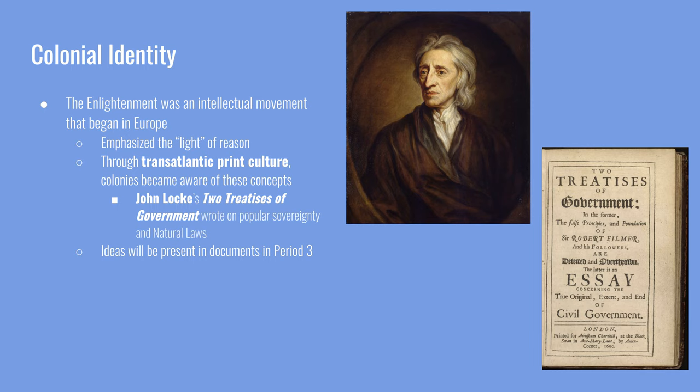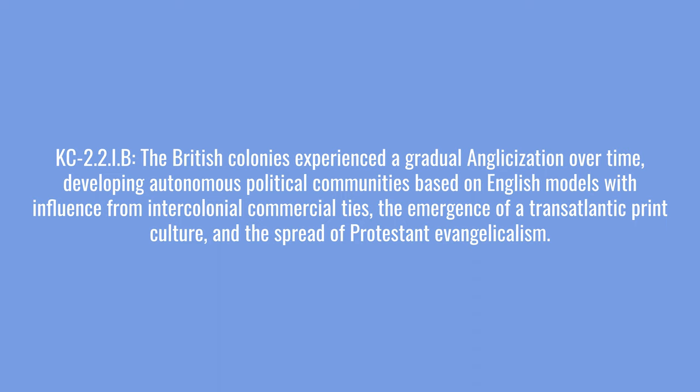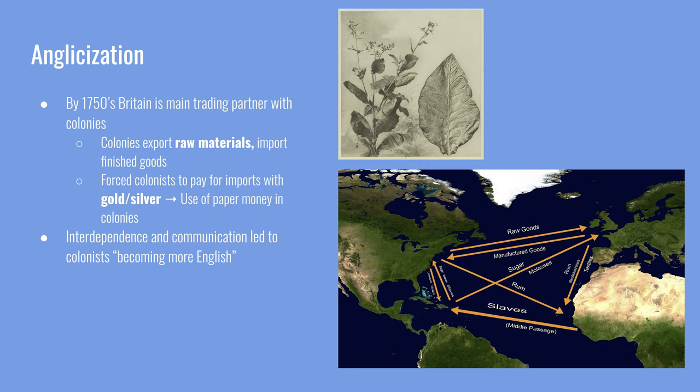The next key concept is that the British colonies experienced gradual Anglicization over time, developing autonomous political communities based on English models with influence from intercolonial commercial ties, the emergence of a transatlantic print culture, and the spread of Protestant evangelism. By the 1750s, Britain was the main trading partner of the colonies — about 50% or just over 50% of all trade went back and forth to Britain. As interdependence grew, colonies exported raw materials and imported finished goods. Because the colonies were forced to pay for imports with gold and silver rather than paper money or credit, that led to a reliance on paper money inside the colonies and a feeling of slight independence from England.